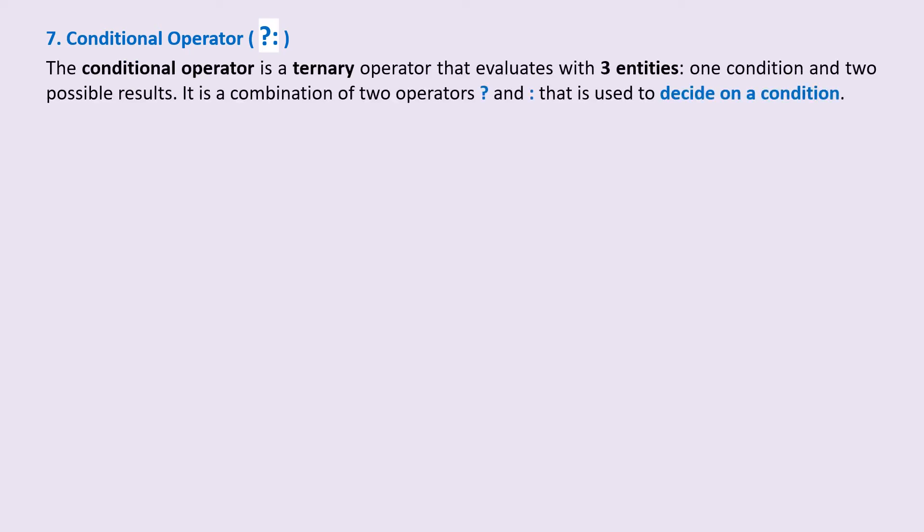The conditional operator is a ternary operator that evaluates with three entities: one condition and two possible results. It is a combination of two operators, a question mark and the colon, that is used to decide on a given condition.